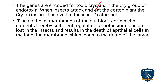The genes encode toxic crystals in the cry group of endotoxin, produced by Bacillus thuringiensis. When the insect attacks and eats the cotton plant, the cry toxins are dissolved in the insect's stomach, because the cotton plant was already genetically engineered with the cry group of endotoxin.